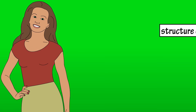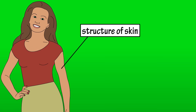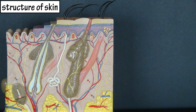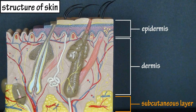In this video we're going to go over the makeup or structure of skin. Human skin, which is also called the integument or the cutaneous membrane, is made up of two layers: the epidermis and the dermis, which are labeled on this model of skin. The subcutaneous layer at the bottom has also been labeled, however it is not actually part of the structure of skin, but it's connected to the dermis of the skin.